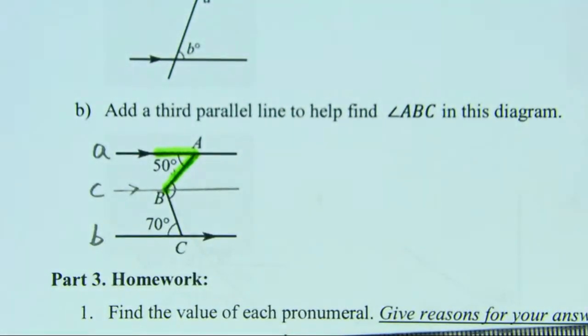Draw line C which is parallel to A and parallel to B. In this case we can have a Z shape.